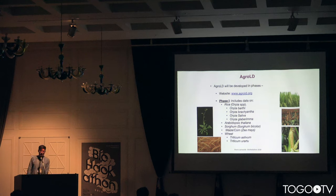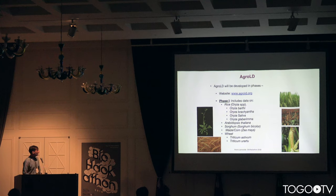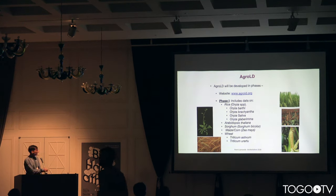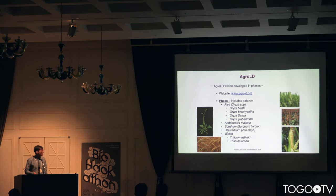We developed the project in phases. We are currently in phase one. The project is available at agroLD.org. We started integrating data mainly on rice species, also Arabidopsis, some wheat species, sorghum and maize, for comparative genomics.